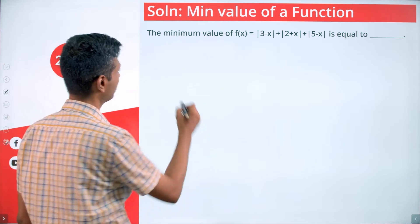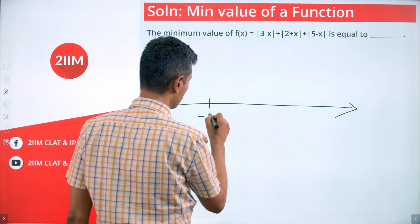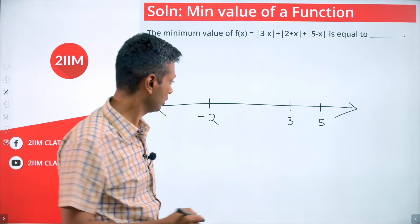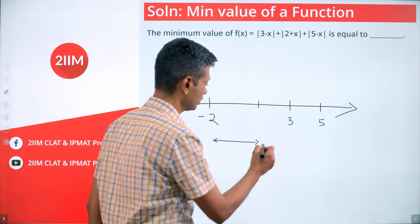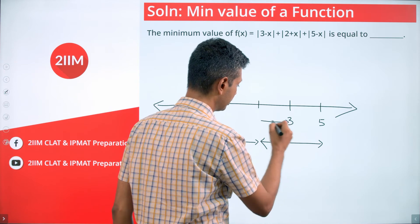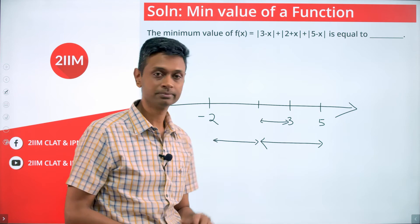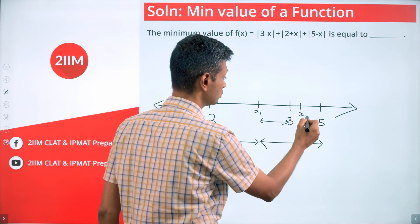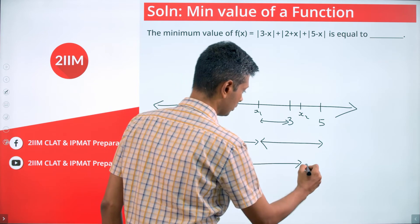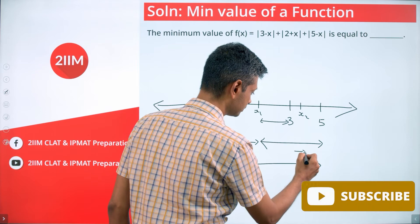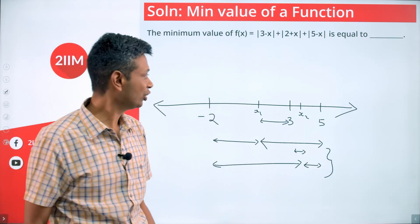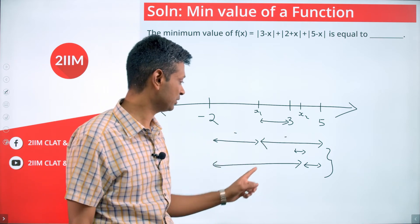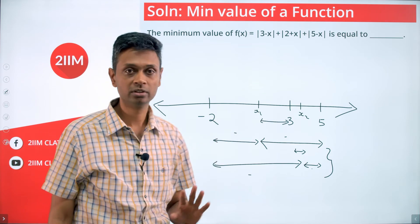Let's focus on x between -2 and 5. For any such x, the distance from x to -2 plus the distance from x to 5 always adds up to 7 — the total span between -2 and 5. No matter where x sits in that interval, those two distances together equal 7. So that part is fixed.